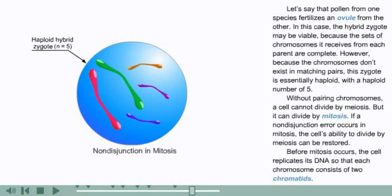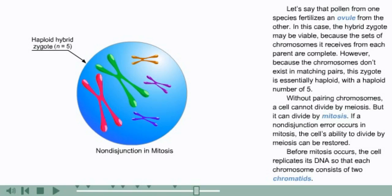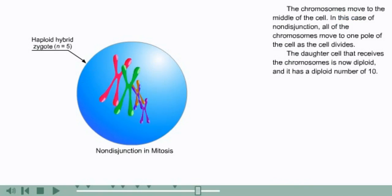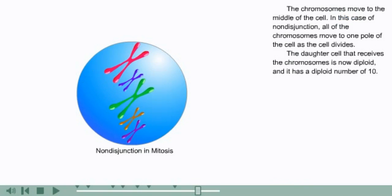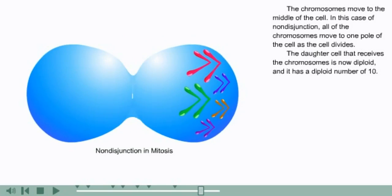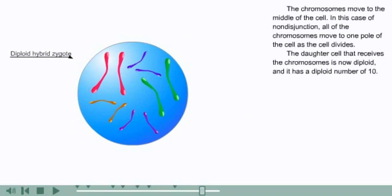If a non-disjunction error occurs in mitosis, the cell's ability to divide by meiosis can be restored. Before mitosis occurs, the cell replicates its DNA so that each chromosome consists of two chromatids. The chromosomes move to the middle of the cell. In this case of non-disjunction, all of the chromosomes move to one pole of the cell. As the cell divides, the daughter cell that receives the chromosomes is now diploid, and it has a diploid number of ten.